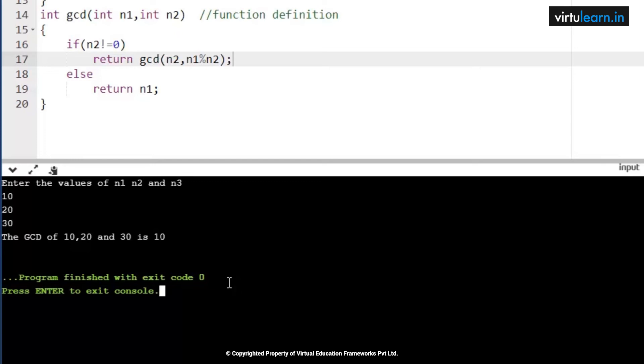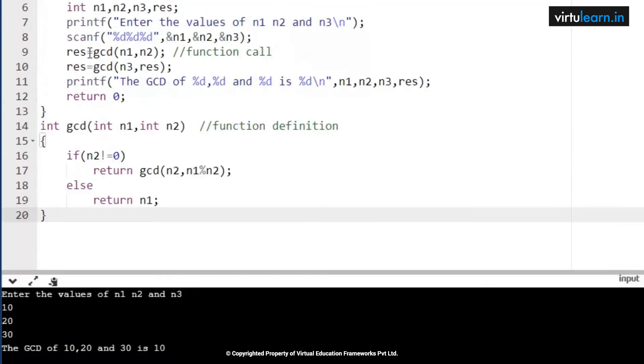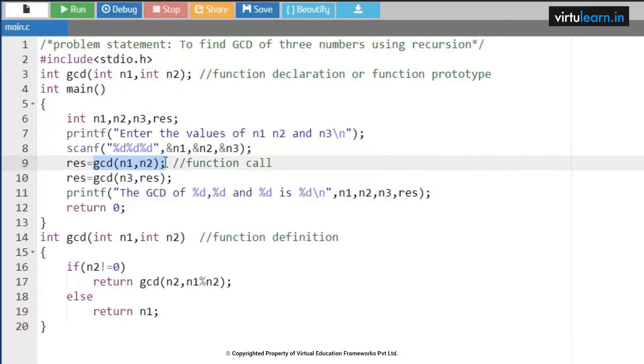So this is how we got the greatest common factor of three given numbers in this program. First we are finding the GCD of n1, n2, that is GCD of 10 and 20 will be 10. That value 10 will be given in the result. Now n3 value is 30. 30 comma 10, and we need to find the GCD of 30 and 10. Your control again goes to the function call, executes these steps.